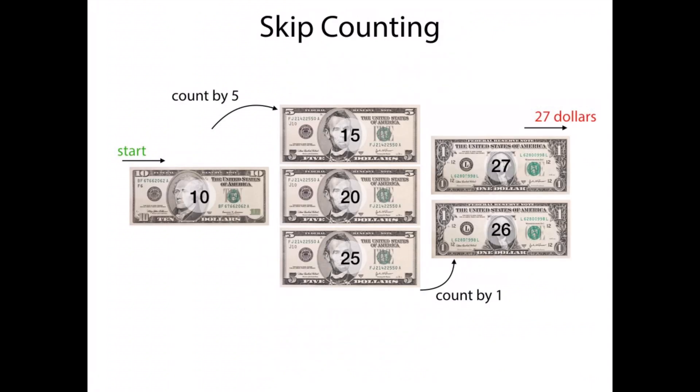Now we can do the same type of thing with bills. Skip counting a group of bills. I again would start with the largest value. So here we are starting with 10, skip counting by fives. So 10, 15, 20, 25, and then we have some ones. So skip counting by ones. 25, 26, 27. So a total of $27 there.